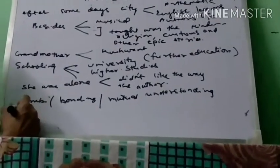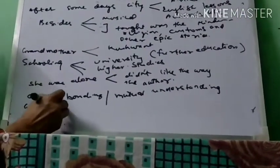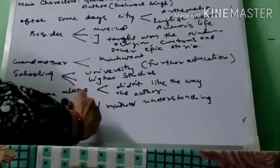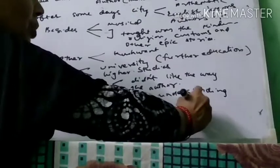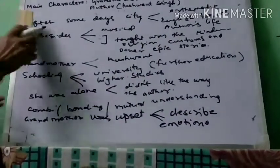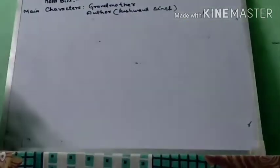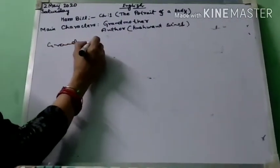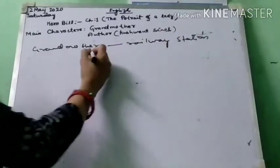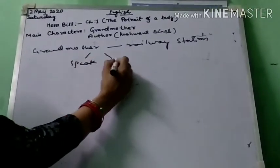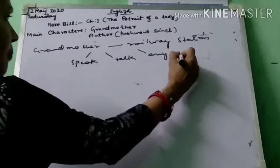When the author returned back after his university lessons, the grandmother was upset and wanted to talk about many things, but she couldn't describe her emotions and feelings. After the university, the author had to go out of the city for his further studies. When he was about to leave, the grandmother went to the railway station to see him off. But she didn't talk anything, she didn't speak, she didn't say anything about how to live his life.